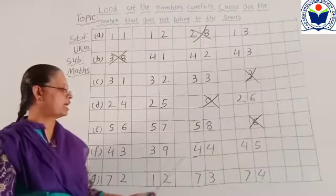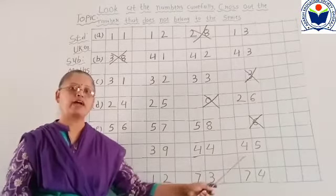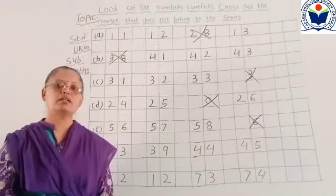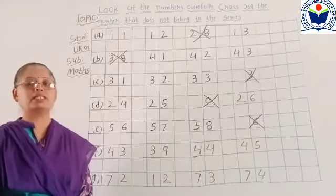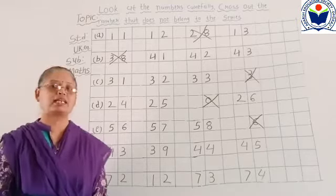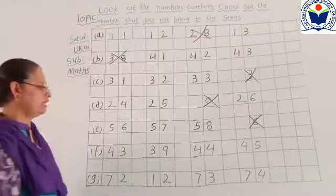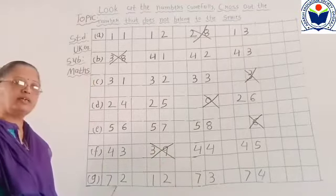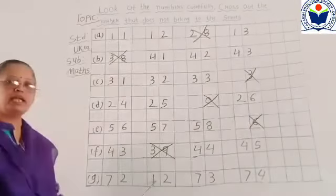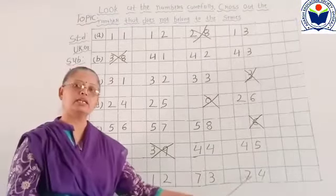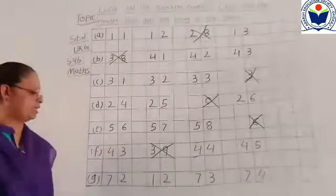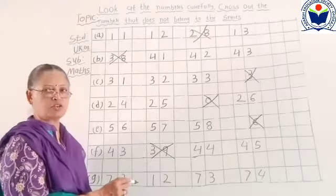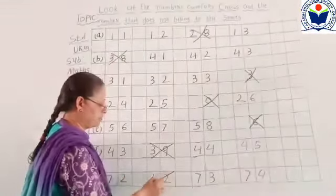43, 39, 44, 45. Very good. Yes. Very good. Meanwhile, cross out from the sign? Yes. 3, 29, 55. Very good. 72, 73, 74. Very good.